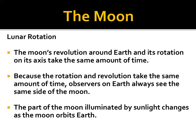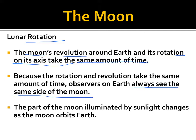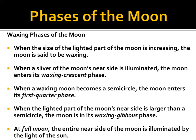Besides revolving around the Earth, the moon also rotates. By coincidence, the moon's revolution around the Earth takes the same amount of time as it takes for the moon to spin. So we always see the same side of the moon. However, the part of the moon that faces the Sun and gets sunlight changes as it orbits the Earth — just the same side of the moon is always facing us. Because of this, we have different phases of the moon.